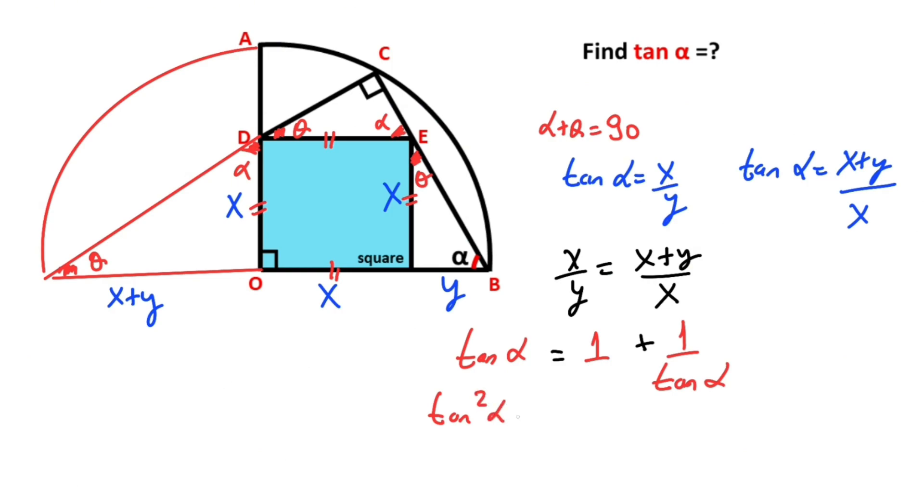Tangent squared alpha equals tangent alpha plus 1. If we organize the equation: tangent squared alpha minus tangent alpha minus 1 equals 0.